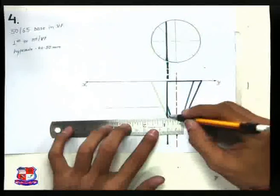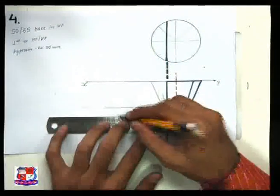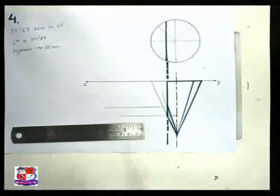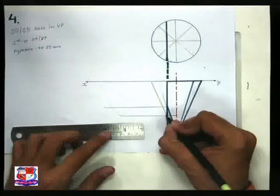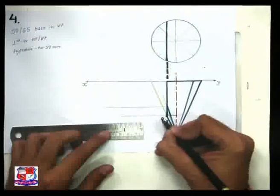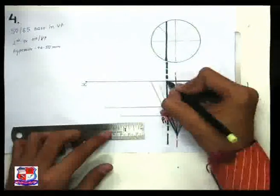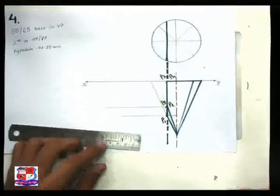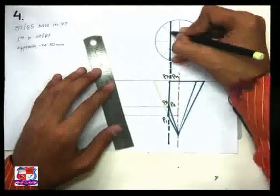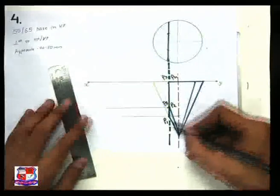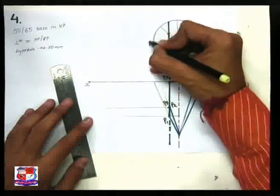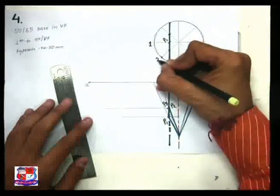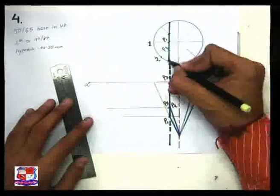Find the points of intersection between the cutting plane and the slant edges. From each intersection point, draw a line perpendicular to the cutting plane. We have five points in total: P1 on generator 1, P2 on generator 2, P3 on generator 3, and further points on generators 4 and 5.